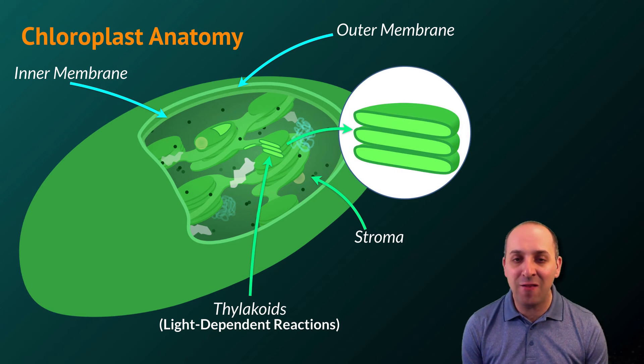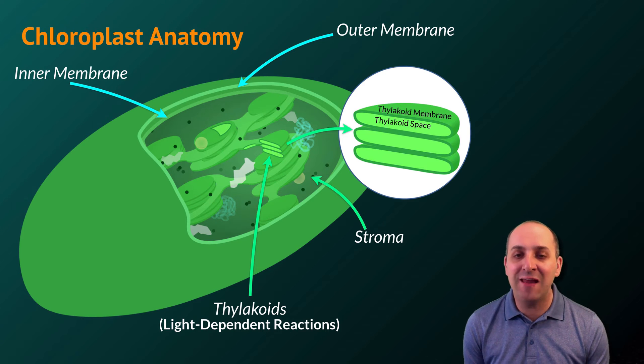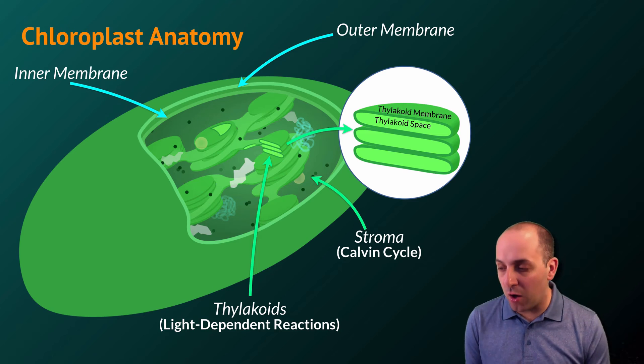If we magnify a thylakoid, we can see that there are flattened stacks of membranous discs. The membrane that makes up the thylakoid is known as the thylakoid membrane, and the space inside of the thylakoid is known as the thylakoid space. It's the thylakoid membrane where the light-dependent reactions occur. The Calvin cycle will occur at the stroma.